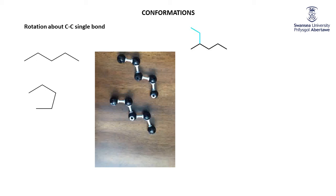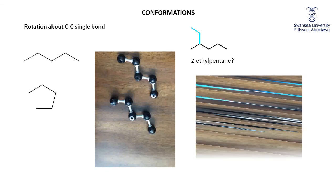Another example that came up last week while working through the worksheet. Consider that molecule there. Some people would look at it and say it is 2-ethyl pentane. Those of you who are a little wiser would say, no, actually the chain starts up the top with the ethyl group, so it's actually 3-methyl hexane. Here again is a little animation showing how you can turn what looks like 2-ethyl pentane, by rotation around carbon-carbon single bonds, into the real 3-methyl hexane.